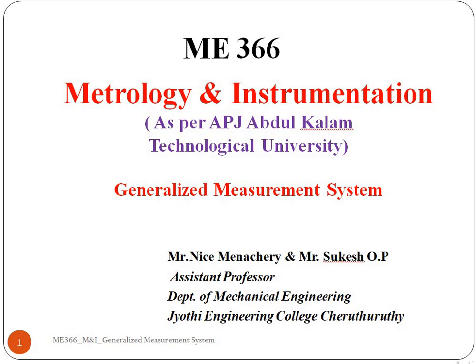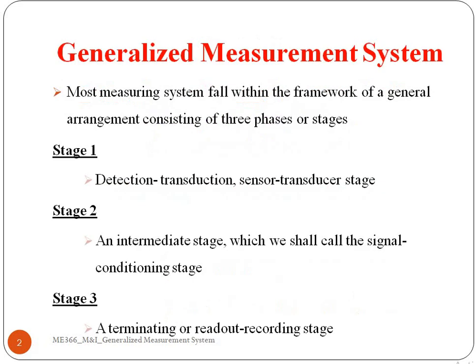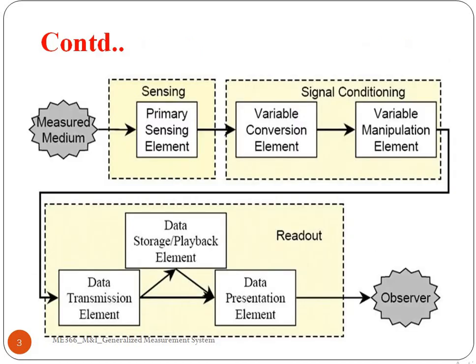Today we are discussing the generalized measurement system. It consists of three stages: stage one is the detection stage, stage two is the intermediate or signal conditioning stage, and stage three is the terminating or readout or recording stage. In the block diagram, the measurand is sensed by the primary sensing element, the signal is conditioned, then fed to the readout stage, and finally observed using certain instruments or recorded.